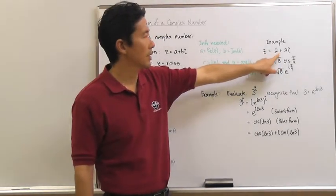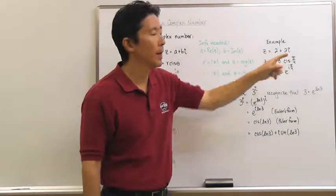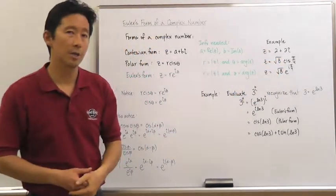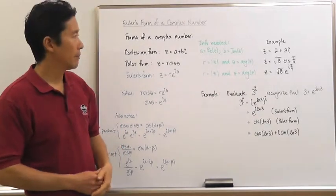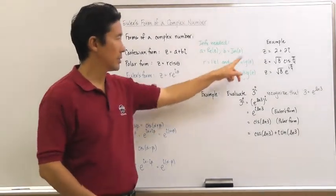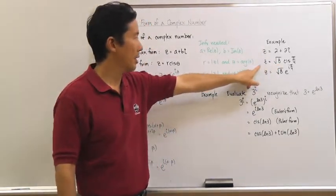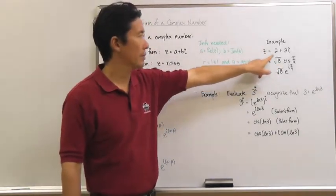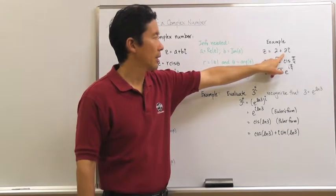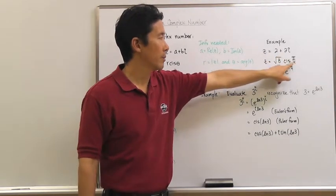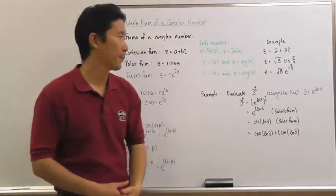Let's say, for example, that z is going to be equal to 2 plus 2i, which is Cartesian form. The modulus is going to be the square root of 8, and the argument of that particular complex number is going to be pi over 4.